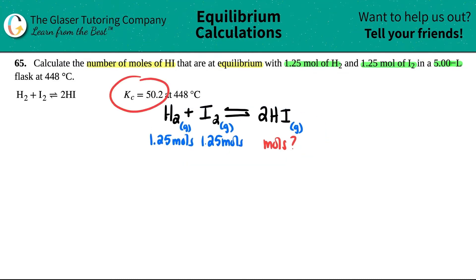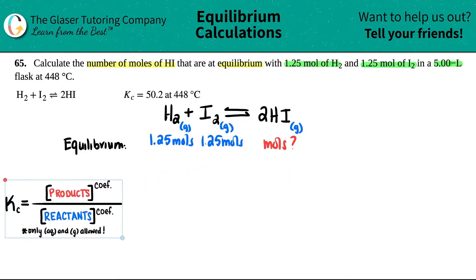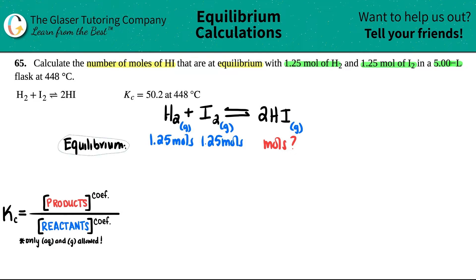All right, so they gave us the KC value, and they're searching for the number of moles of HI. Well, whenever they give us a KC value and they give us starting information at equilibrium, they did say that all these values were at equilibrium. We can use the KC formula. The KC formula is this general formula right here. We just have to make it specific for what we have here. Now, let's just start there. The KC would equal to products over reactants, and I'm assuming that they're all going to be gas or aqueous, so they're all going to be used in the formula.